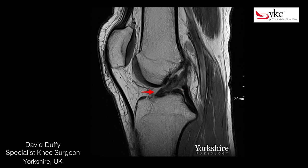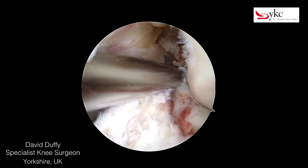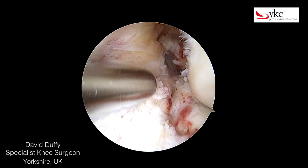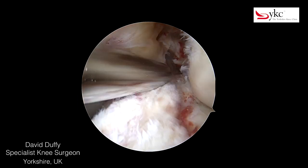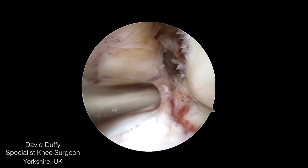On other MR slices, whilst clearly showing some ACL tissue still attached to the tibia, where it has pulled away from its femoral attachment, the defect is clear. Removing these torn ACL fibres is the first stage of any surgical reconstruction.